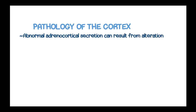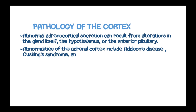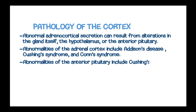Abnormalities of adrenocorticoids can result from a deterioration in the gland itself, the hypothalamus, or the anterior pituitary. Abnormalities of the adrenal cortex include Addison's disease, Cushing's syndrome, and Conn's syndrome. When there is an abnormality in the anterior pituitary gland, there will be development of Cushing's disease, in which there is excess production of ACTH hormone.